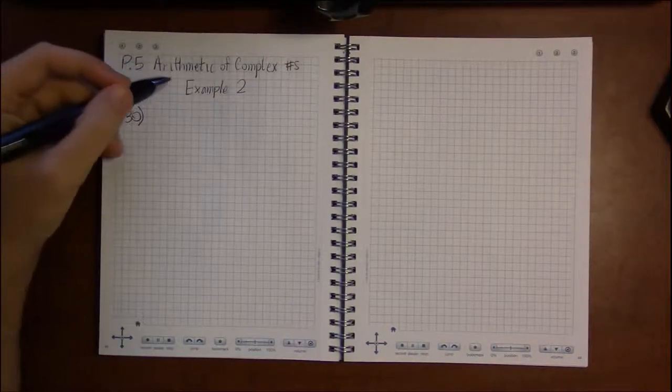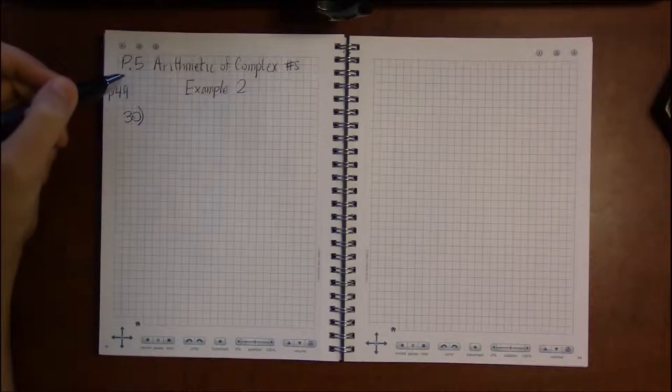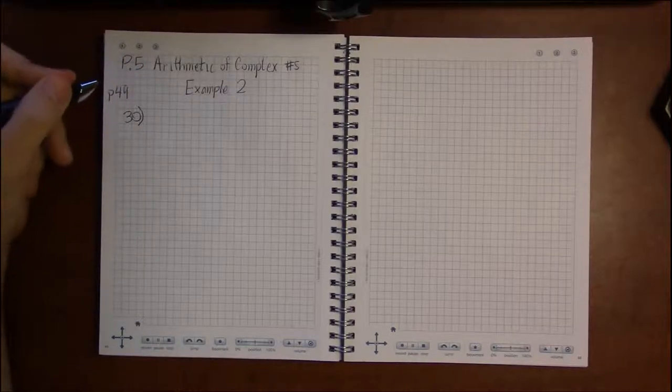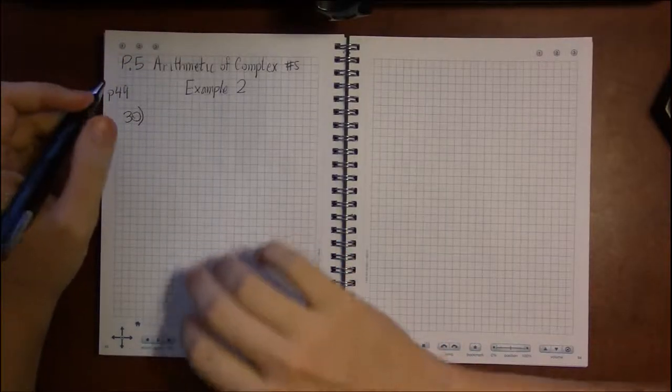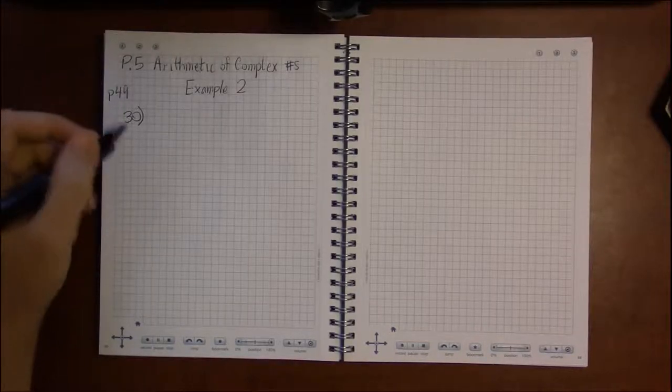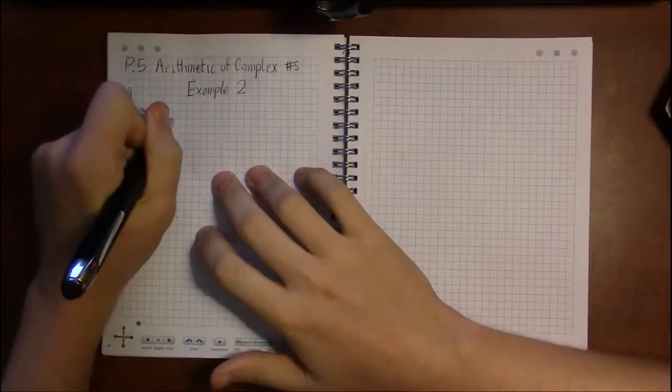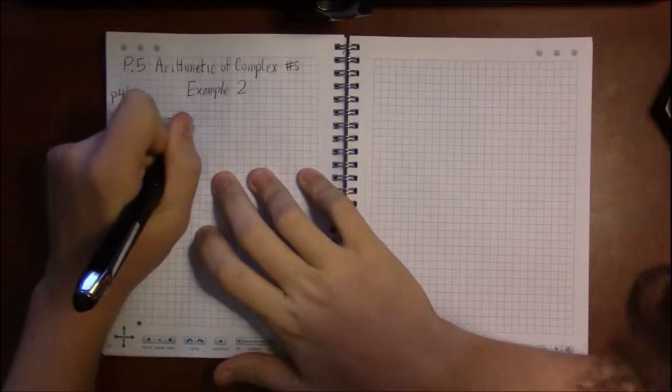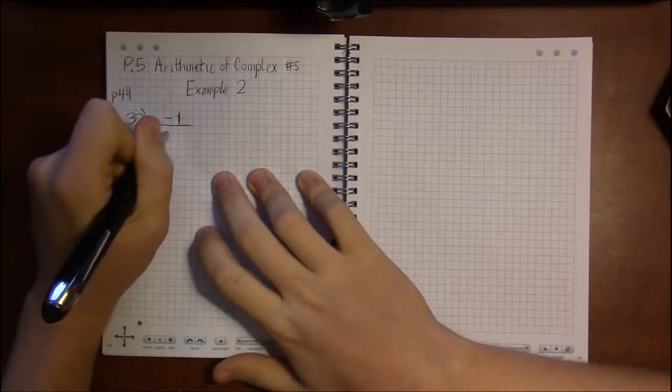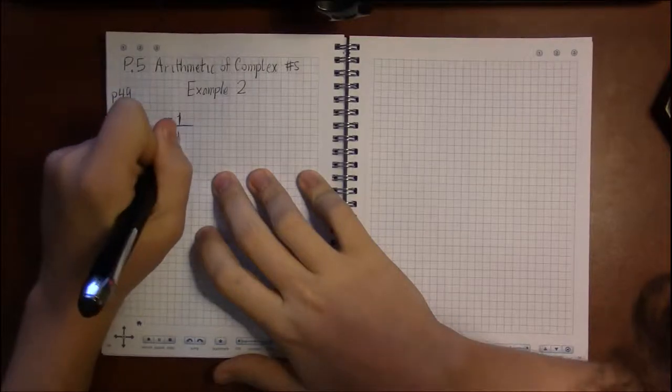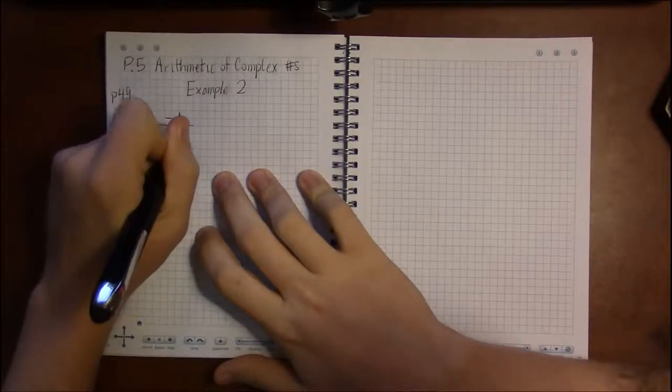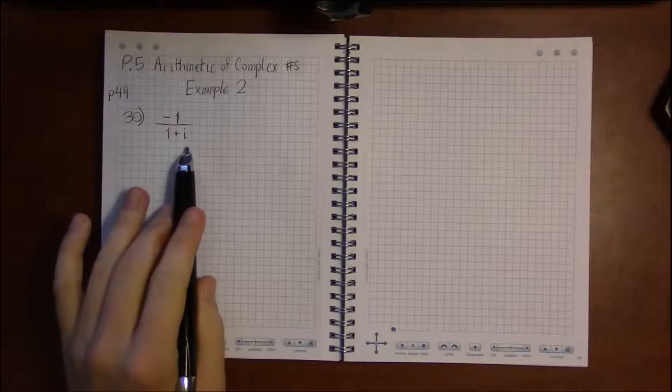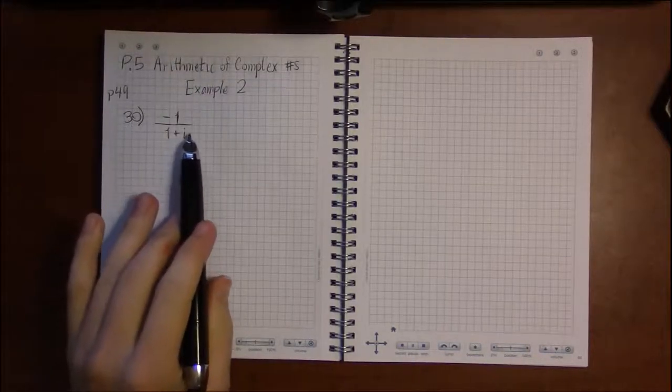Alright, so our last set of examples for section P5. We're on page 49 looking at problem 30, where we're going to start out with division. So minus 1 divided by 1 plus i. Now with division, there's a long nasty formula you can use, or you can start by saying, well, if there's an i in the denominator, then...